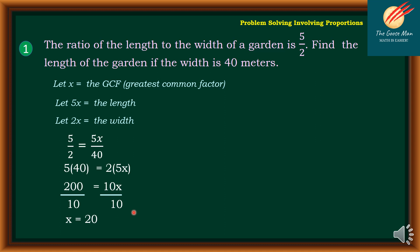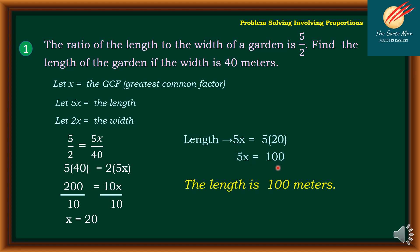But I want to find the length. So that is 5 times x, which is equal to 5 times 20. So that is equal to 100. Therefore, the length is equal to 100 meters.